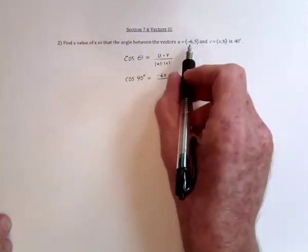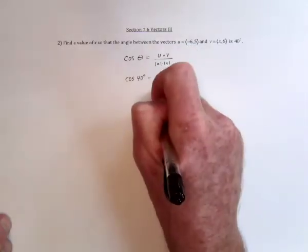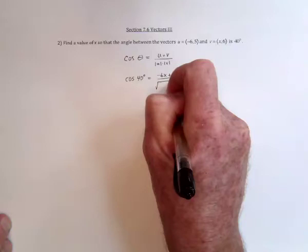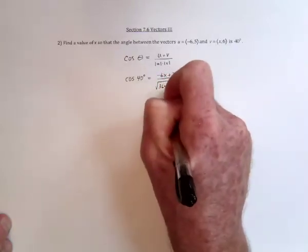And then for the length of u, square each of its components, 36 and 25, add those together and put that in a square root, 36 and 25.